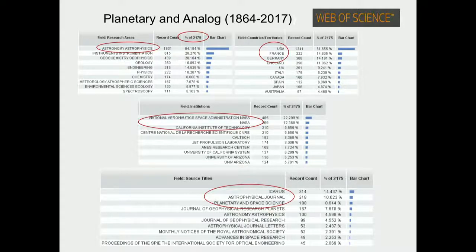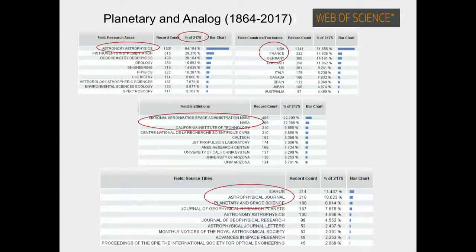A third bibliographic search merging 'Astrobiology' and 'Analog' yields only 320 records — not many. This is an important field in which we need to increase our activity: the connection between analogs and astrobiology. The research areas are astronomy and astrophysics, engineering, and geology. The first country is USA, with France second. The first journal in this case is Astrobiology, followed by Icarus, Astrophysical Journal, and Planetary and Space Science.